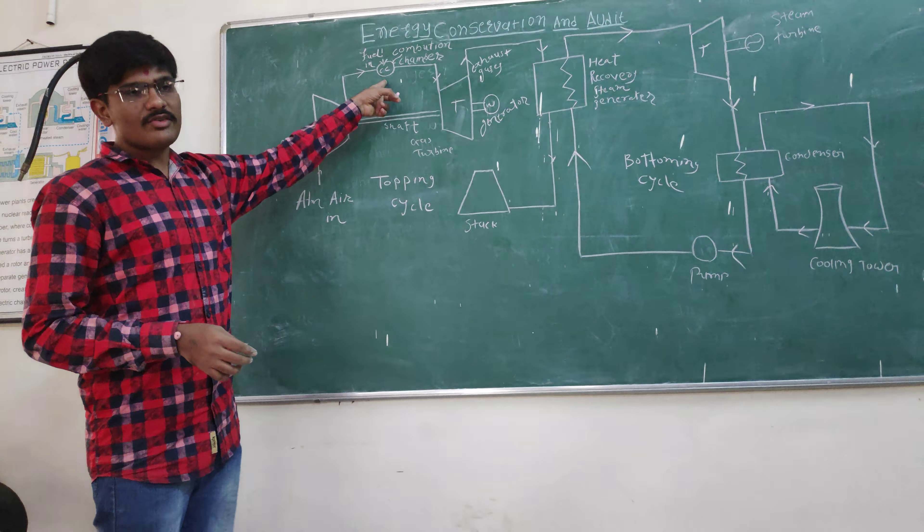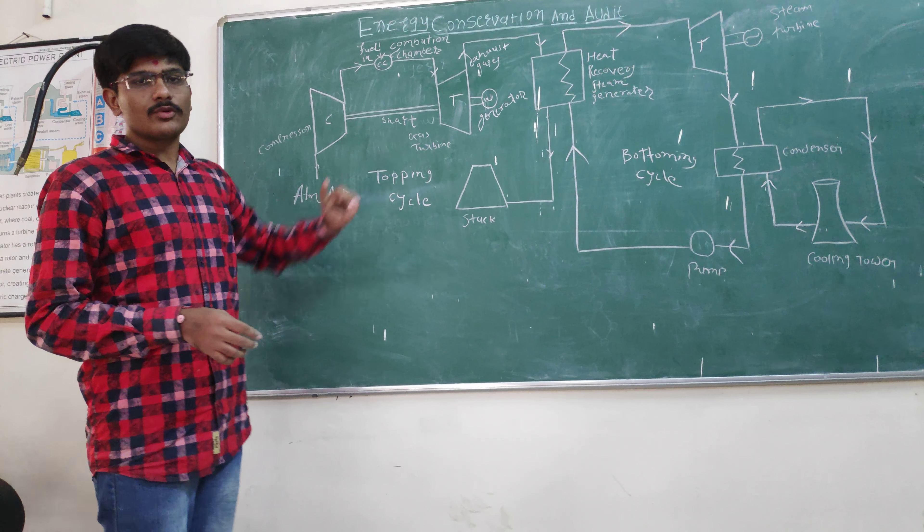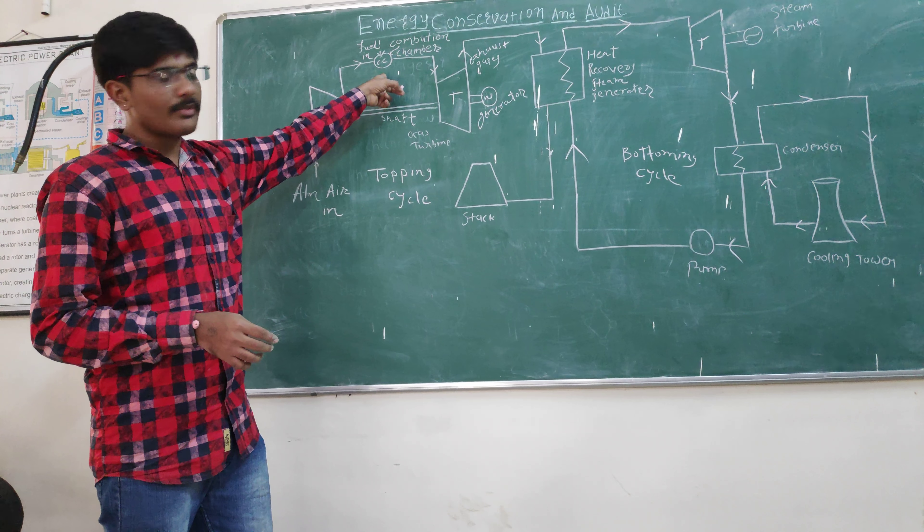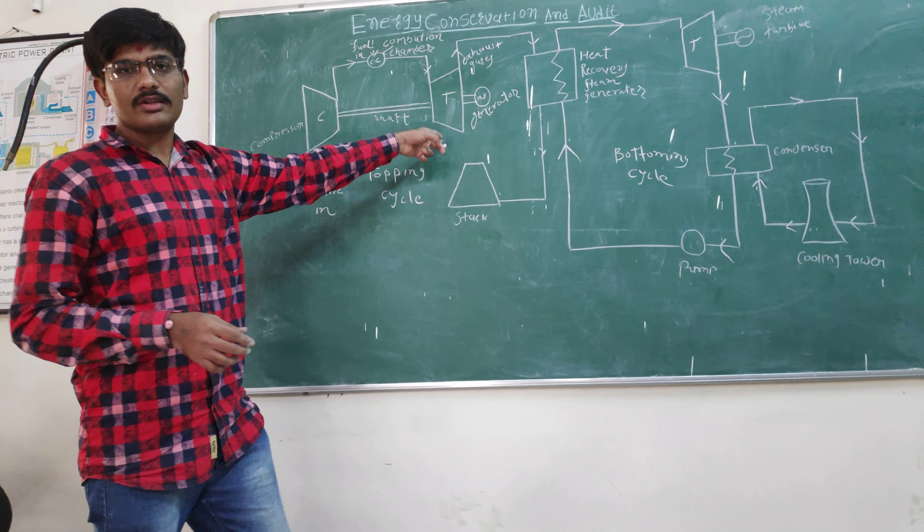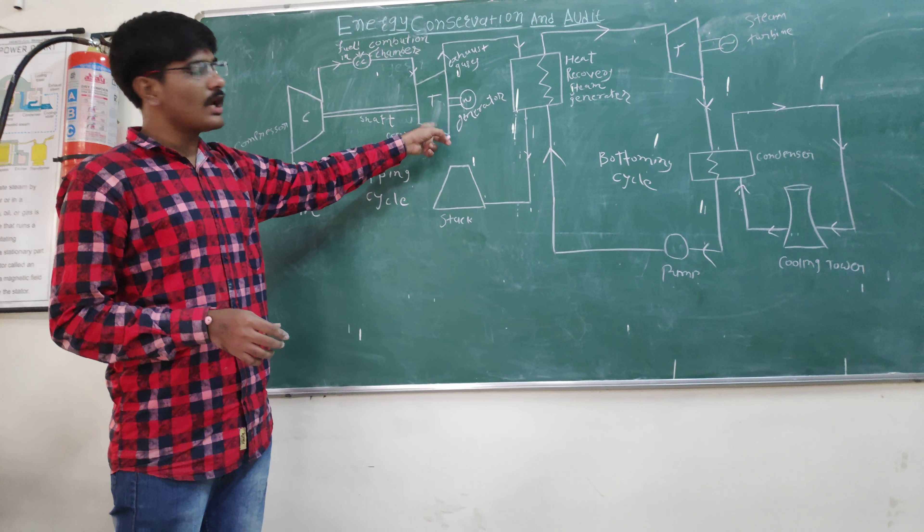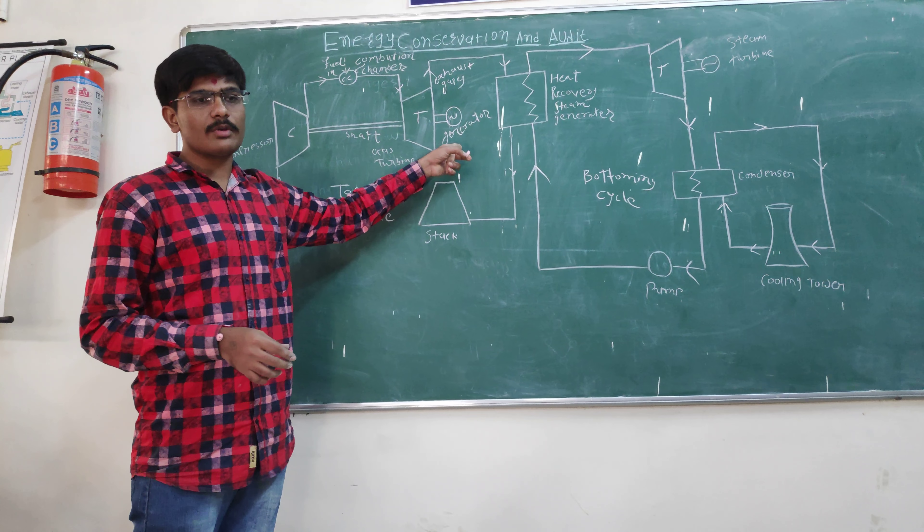In the combustion chamber, the fuel is supplied from the external source and the fuel is combusted in the combustion chamber. Then this gas is utilized in the gas turbine and with the help of this gas turbine, we will produce the power.